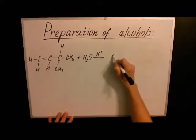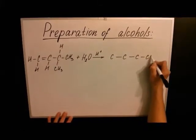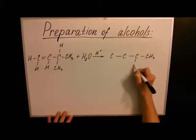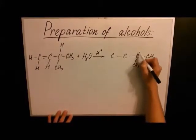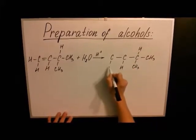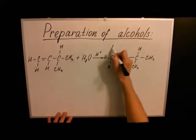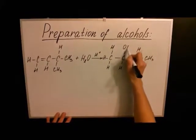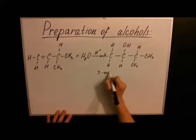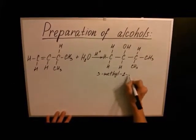To predict the major product of our hydration reaction, we will use Markovnikov's rule, which states that a hydrogen atom is added to the double bonded carbon atom that originally carried the most hydrogen. In this case, it is carbon number one. We add the hydroxide ion to the other double bonded carbon, which makes the major product, 3-methyl-2-butanol.